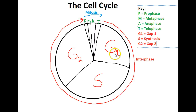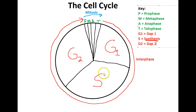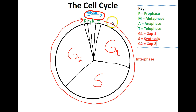G1 stands for gap 1, because if you were looking at a cell under a microscope, this is a gap of time where it doesn't seem much is going on. S is a big foray of activity where the cell is synthesizing more DNA. And then we get to G2, which is another gap where it almost seems like nothing much is actually happening. The cell spends only a small fraction of time actually dividing; the rest of the time it's living out its life.